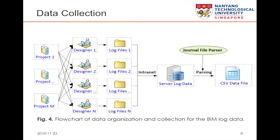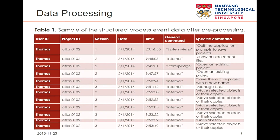The figure here shows the flowchart of the data organization. In a design firm, there are many projects running in parallel. Each project has several designers working together, and each designer generates a folder for storage of log data during the design process. This folder is then uploaded to the system server. We use a general file parser to translate the raw text files into structured CSV data files. The table here shows an example of the structured CSV data, with columns representing user ID, project ID, timestamp, and the contents of design commands.